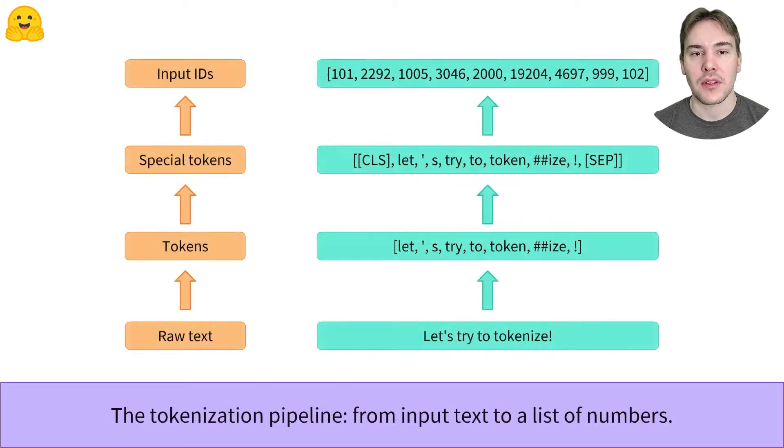Here is a quick overview of what happens inside the tokenizer object. First, the text is split into tokens, which are words, parts of words, or punctuation symbols. Then, the tokenizer adds potential special tokens and converts each token to their unique respective ID, as defined by the tokenizer's vocabulary. As we'll see, it doesn't quite happen in this order, but doing it like this is better for understanding.